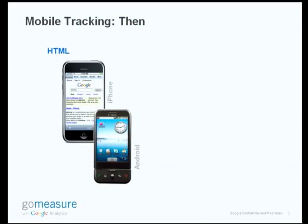Google Analytics, even in the prior versions, always played nice with iPhones and Androids — phones that have full-featured HTML browsers. Analytics has always worked. So right now, if you have Google Analytics on your desktop site and an iPhone or Android visits it, you'll see it registered properly. No issues with tracking. It already works. Nothing else needs to be done.